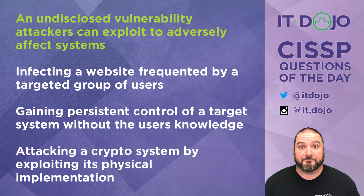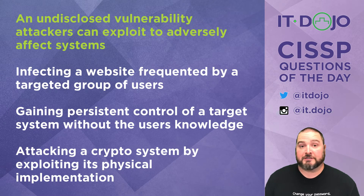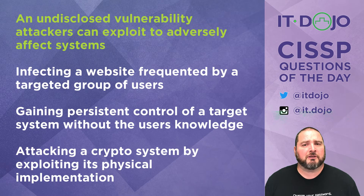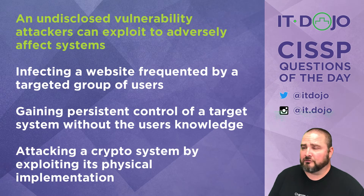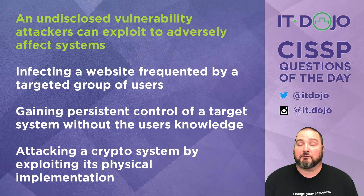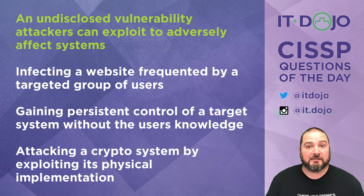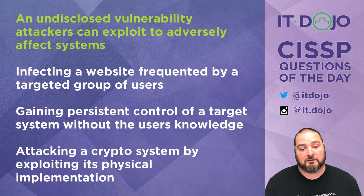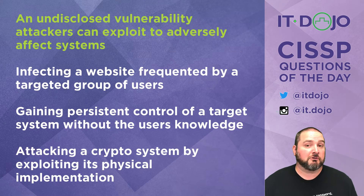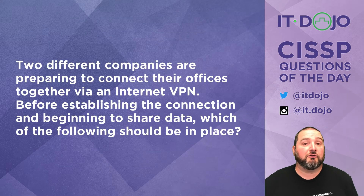The next choice says gaining persistent control of a target system without the user's knowledge — that's more like the definition of a rootkit. And the last choice, which is also not correct, describes code that attacks a crypto system by attacking its physical implementation. That is more akin to a side-channel attack. So for this question we're looking for a zero-day, which is the first option.